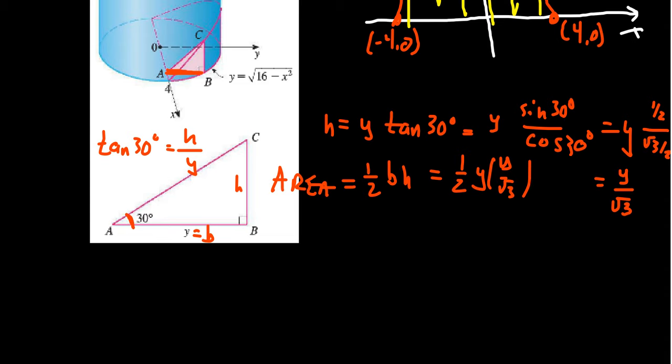So we're just going to leave it the way it is. So basically what I'm saying is the area is going to equal Y squared over 2 times the square root of 3. That's going to be the area of one of these triangles. But again, this is in terms of Y.